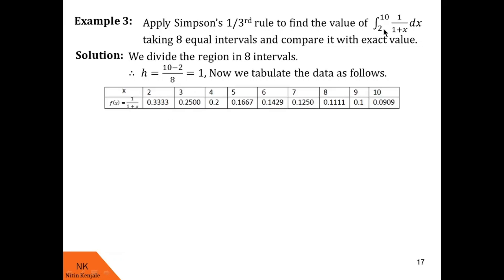Taking f(x) = 1/(1+x) with h = 1, we calculate the data table. x₀ = 2, then adding h we get x₁, x₂, x₃, and so on. Substituting these x values into f(x) = 1/(1+x), we find the corresponding y values: y₀, y₁, y₂, y₃, y₄, y₅, y₆, y₇, and y₈.